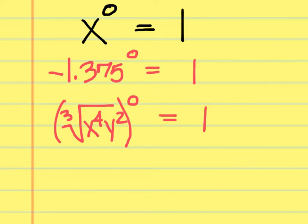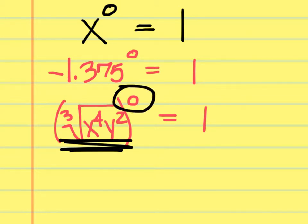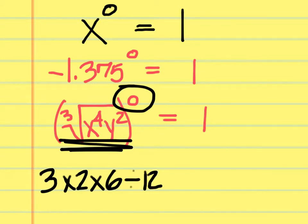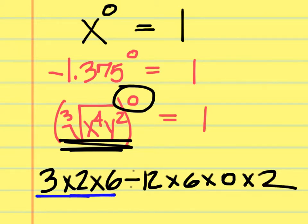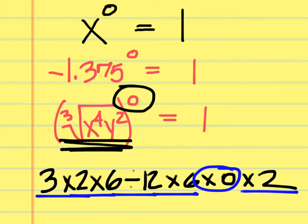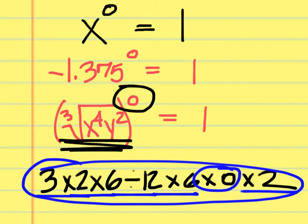Look at the problem as a whole before starting to simplify. For example, consider 3 × 2 × 2 × 6 ÷ 12 × 6 × 0 × 2 — if you see a zero in a multiplication chain, the whole expression equals zero. But with exponents, anything to the zero power is one, not zero. These are two different situations.